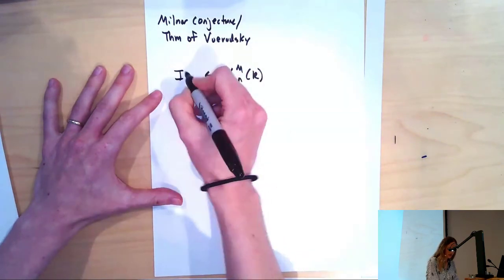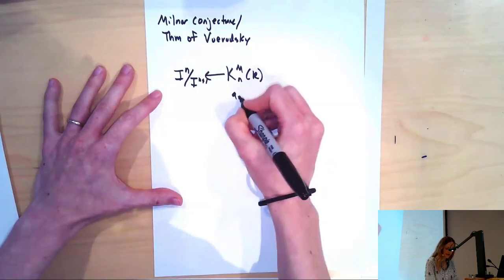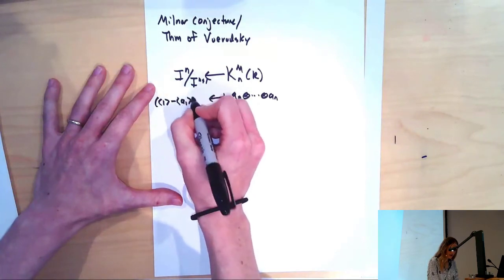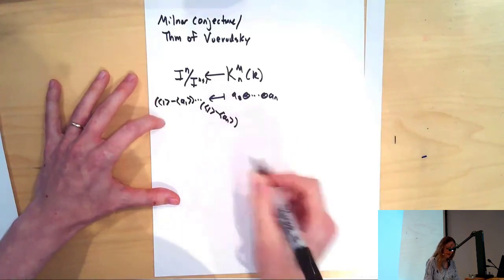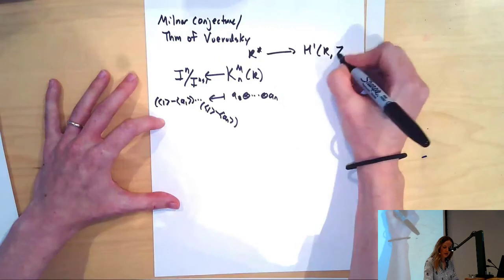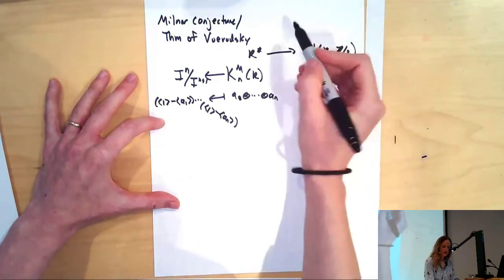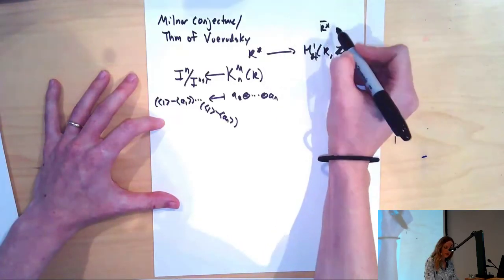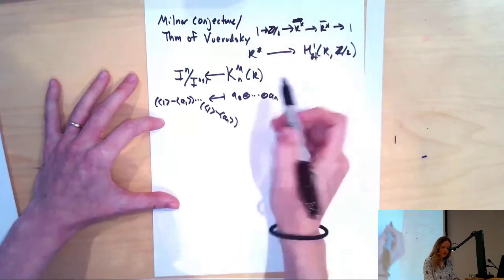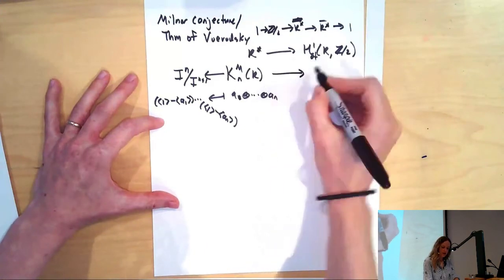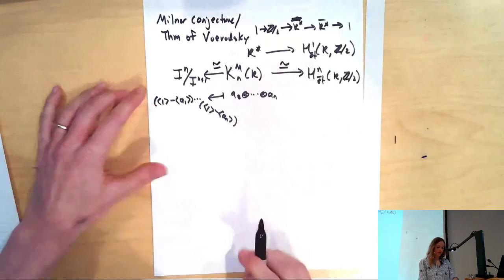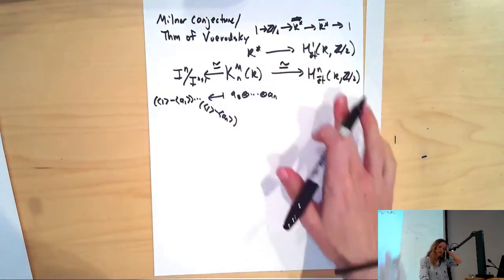We can make a map from Milner K-theory degree 1, which is K*, to H¹, and then use the cup product to have this go to Hⁿ. The Milner conjecture is that these are all isomorphisms, so that the associated graded of this filtration is the étale cohomology or the Milner K-theory. In particular, if you have a field whose n-th étale cohomology with ℤ/2ℤ coefficients doesn't vanish, then you've got something non-trivial in this piece.